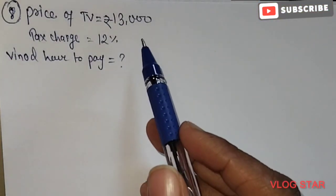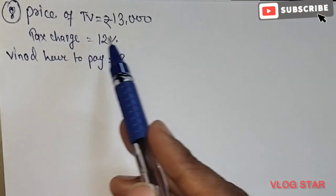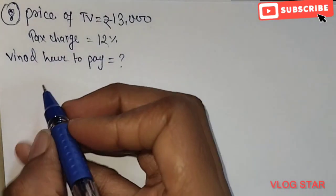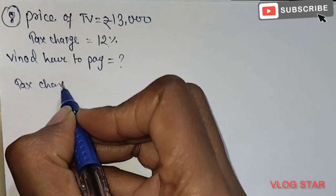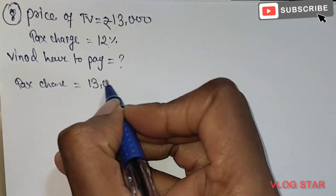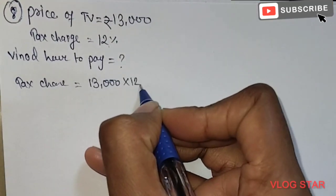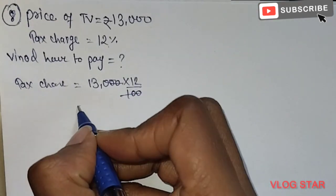Here the price of TV is 13,000 and tax charge is 12%. So first we will find the tax charge on TV: 13,000 into 12 by 100. Cancel this 100 with 20.